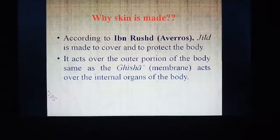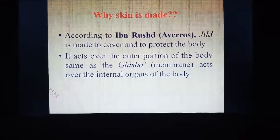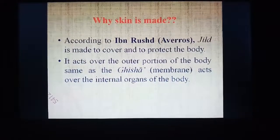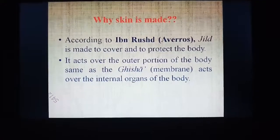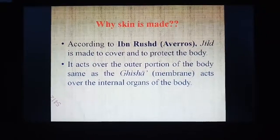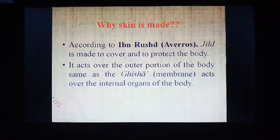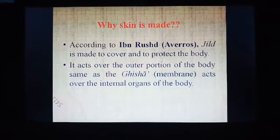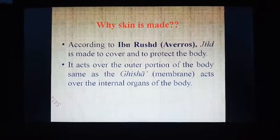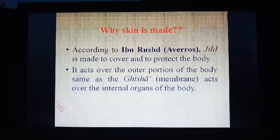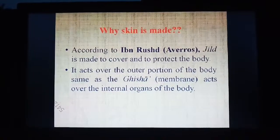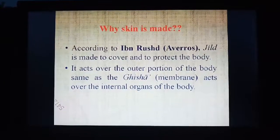According to Ibn Roost, also called Abu Rose, the skin is made to cover and protect the body. The skin acts over the outer portion of the body in the same way as the ghisha, or membrane, acts over the internal organs of the body.